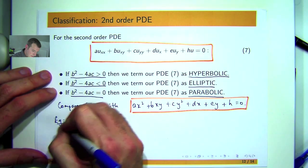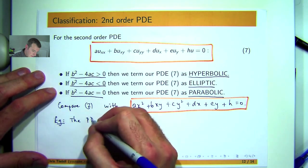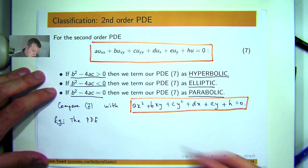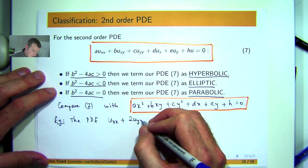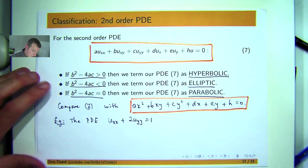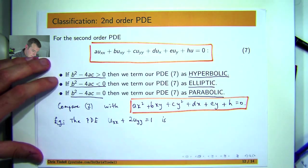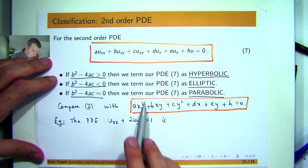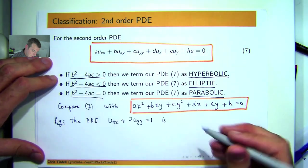So to give you a little bit of definiteness, let's consider the following PDE. And this is going to be just an inhomogeneous PDE, but it doesn't matter. So here a would be 1, b would be 0, c would be 2. And if you work out your discriminant, you'll see that the PDE is elliptic, because you'll get a negative discriminant.